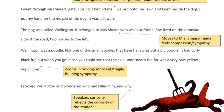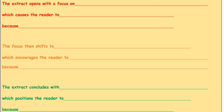Lastly, 'I stroked Wellington and wondered who had killed him and why.' At the end of the extract, the speaker's curiosity reflects the curiosity of the reader. In the boxes are the notes you can use for question three. You can do this as the bare minimum and maybe get four out of eight, but if you repeat the middle section a few more times, you can get up to eight out of eight. 'The focus then shifts to' can be repeated several times — you can only do the first one once and the last one once, but the middle one you can do multiple times, once for every paragraph in fact.